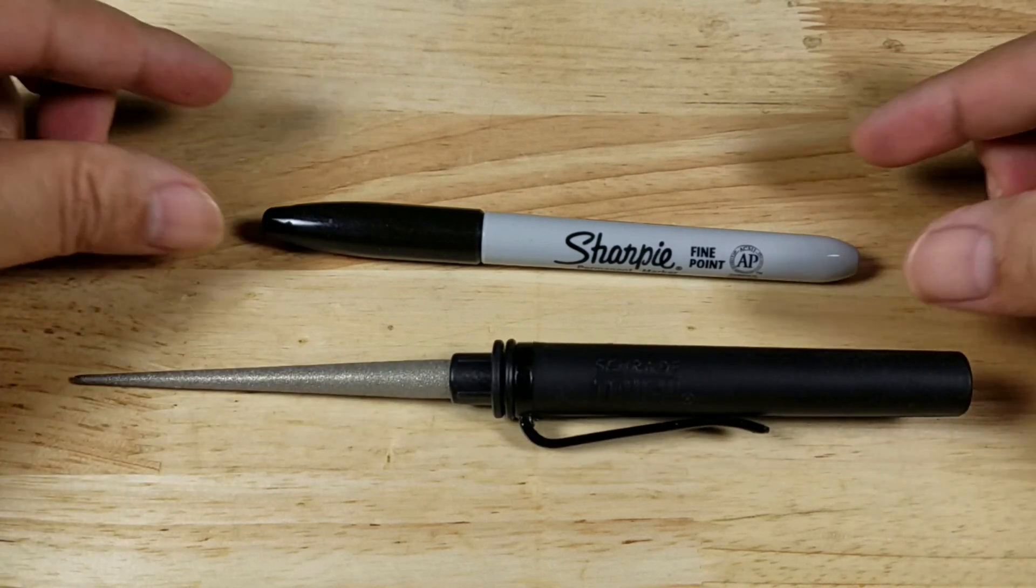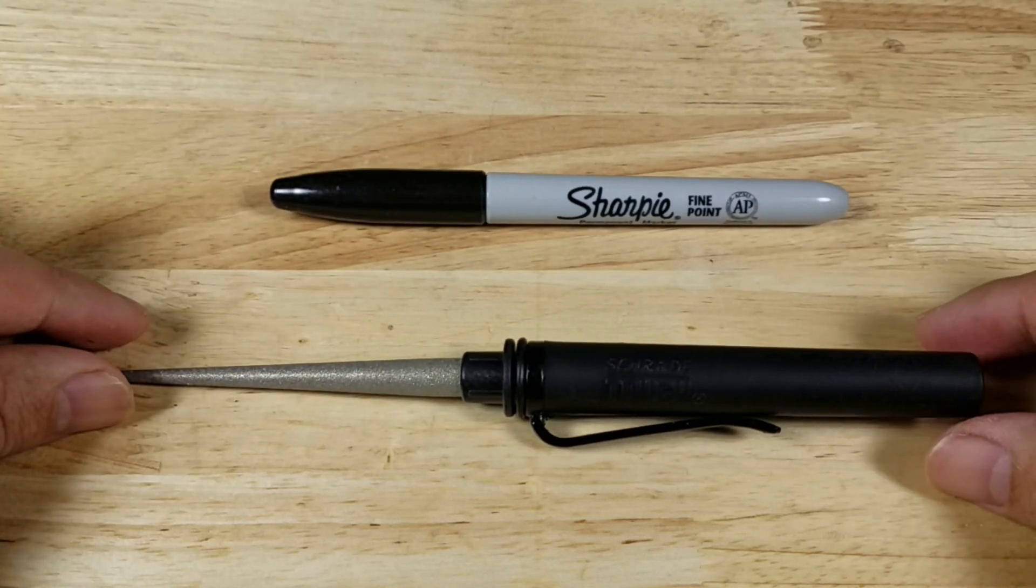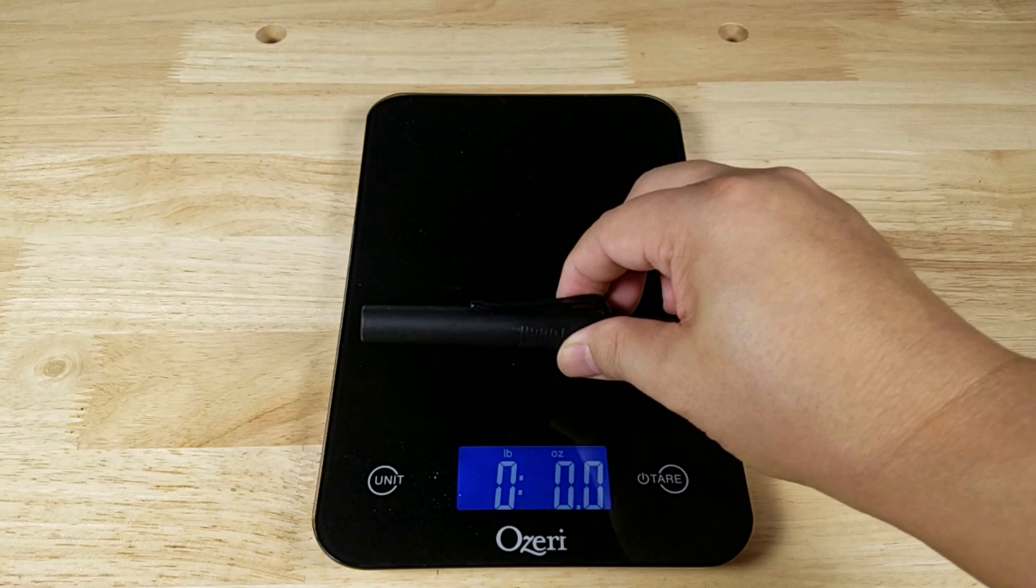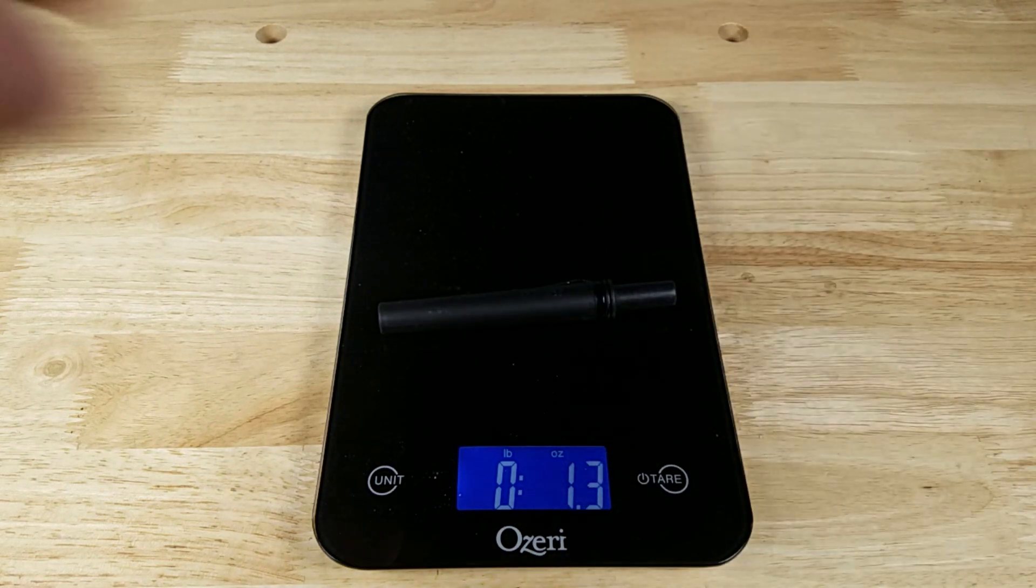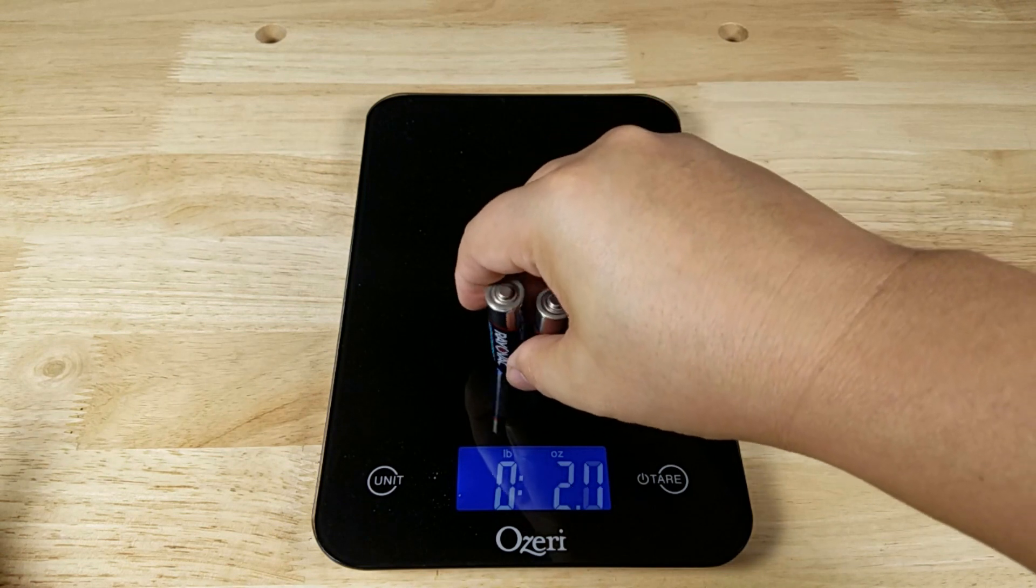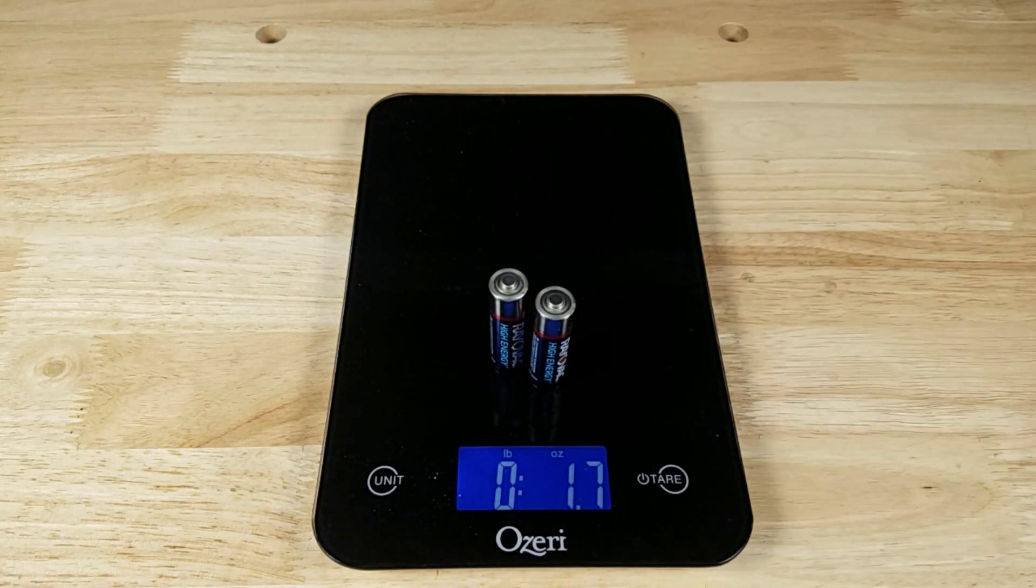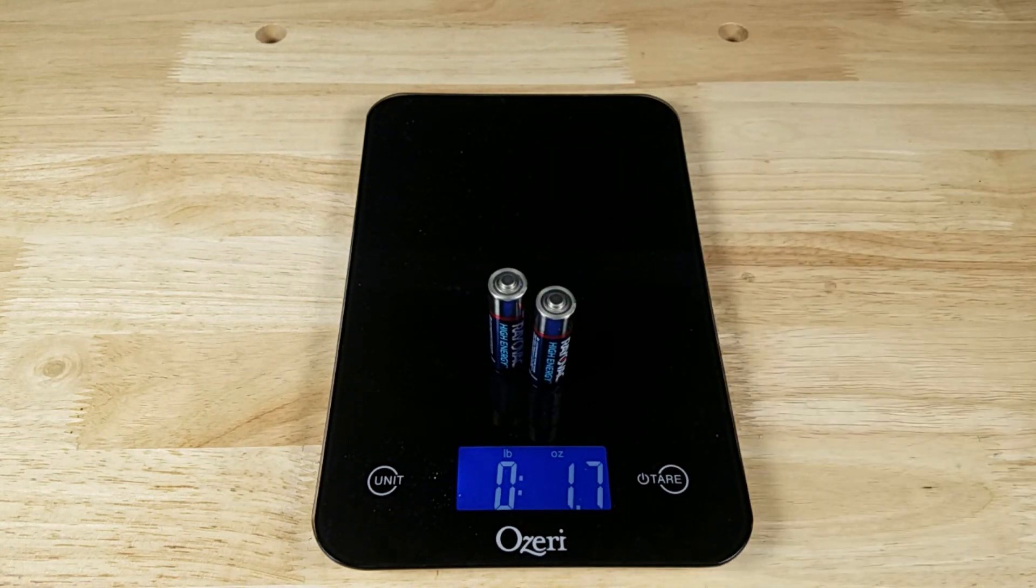There's a look at it there. All right, let's get this on the scale. It weighs almost nothing—1.3 ounces. That's almost as much as two double-A batteries, coming in at 1.7 ounces, so lighter than two double-A batteries.